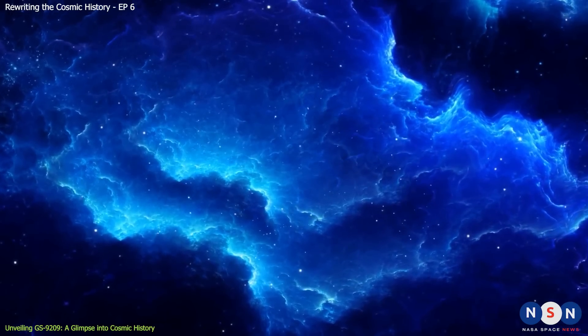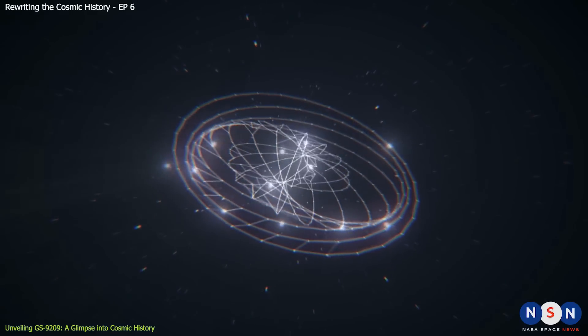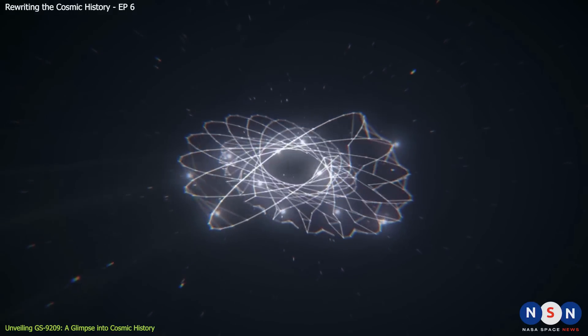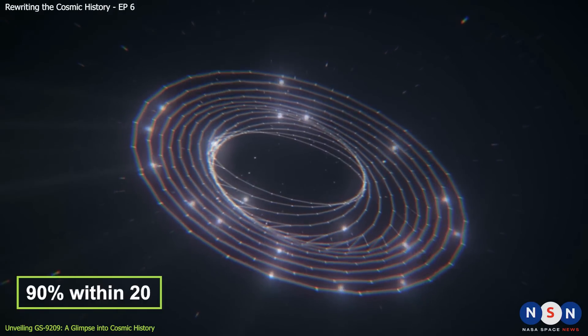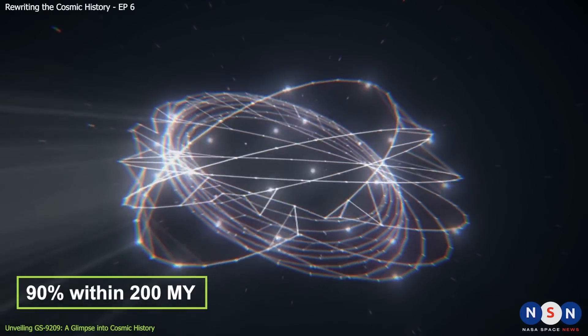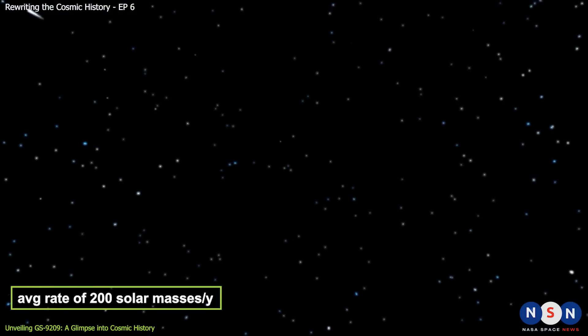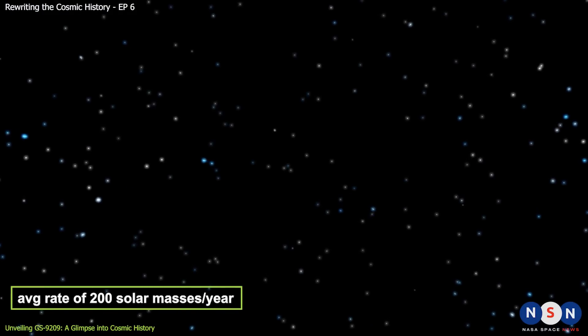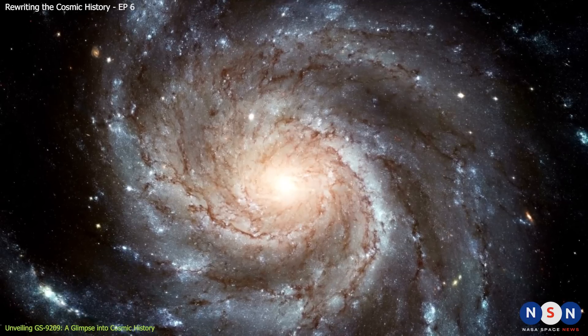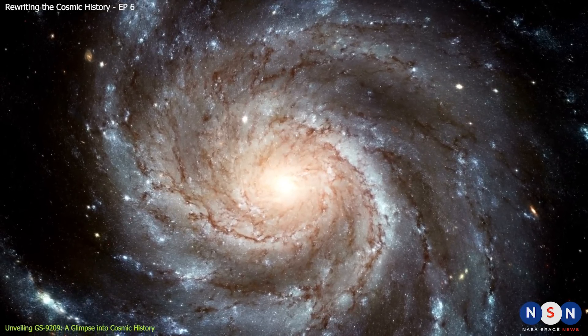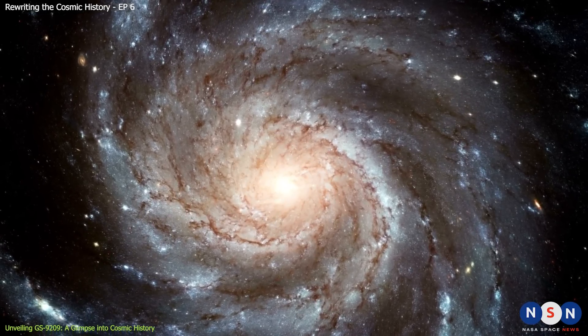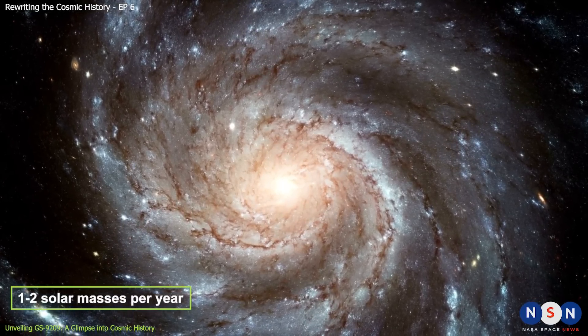But just how rapid was this process? The study reveals that GS 9209 generated about 90% of its stars within a mere 200 million years after its birth, an astonishing average rate of approximately 200 solar masses per year. This starkly contrasts with the current star formation rate of our Milky Way, which stands at a mere one or two solar masses annually.